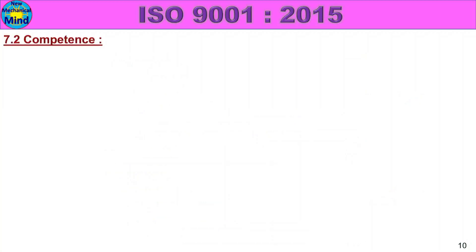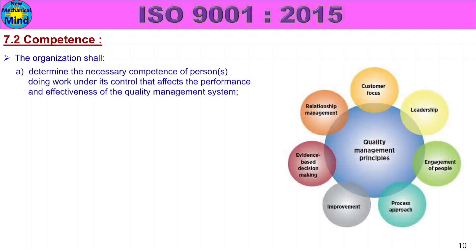7.2 Competence. The organization shall determine the necessary competence of persons doing work under its control that affects the performance and effectiveness of the quality management system.